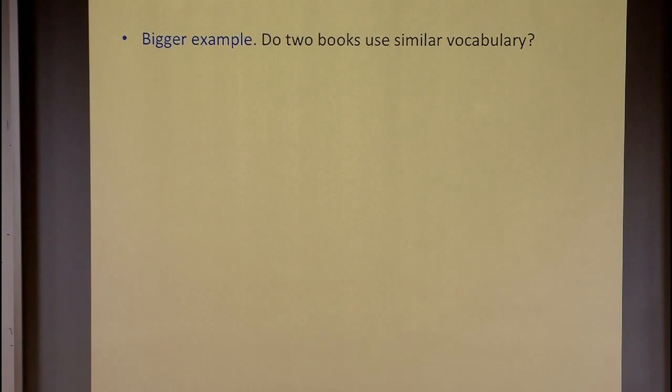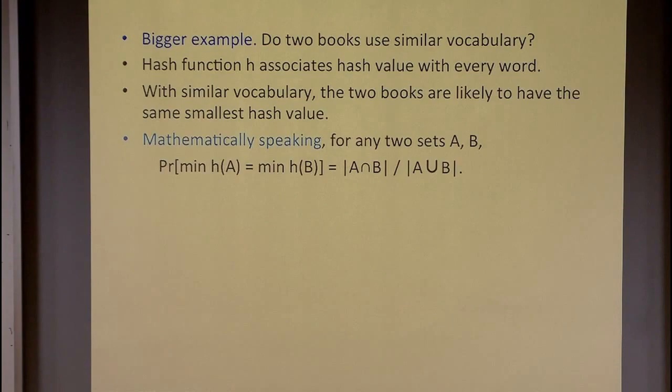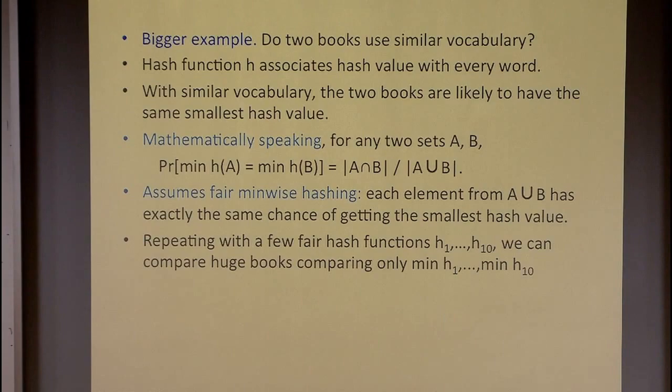If it was just these small examples we could do it by hand. But you could do the same thing for books — associate hash values with every word and see if two books have the same smallest hash value. Mathematically speaking, for any two sets, the probability that they get the same smallest hash value is exactly the size of the intersection divided by the size of the union. That is only assuming fair min-wise hashing, where every element of the union has exactly the same chance of getting the smallest hash value. Otherwise this equation is not true. Assuming we have it, we could repeat with a few fair hash functions to get a good signature for the book, so we can see if two books have similar vocabulary.